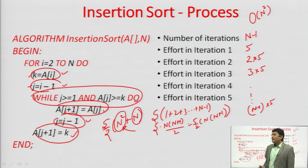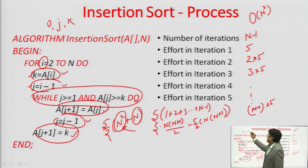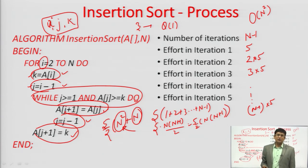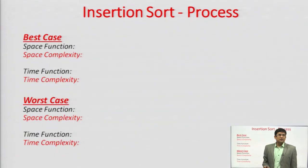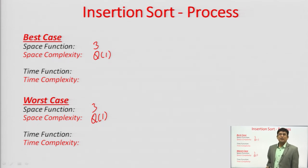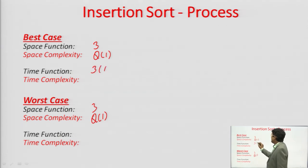For space complexity, we take 3 extra variables: i, j, and k. So the space function is 3 and space complexity is θ(1). No matter how large the array, only these 3 variables are required. This holds for both best and worst cases. The time function for the best case is 3(n−1), written as Ω(n).